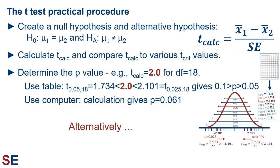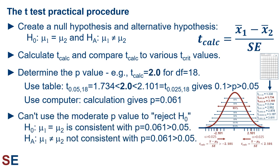Alternatively, if instead we had gotten a t-calculated value of 2.0 with 18 degrees of freedom, things are a little different. When we compare that value to the critical values, the 2.0 is larger than 1.734 — the critical value for alpha of 0.05 — but not as large as the 2.101 corresponding to alpha of 0.025. Therefore, because this is a two-tailed test, our p-value is less than 0.1 but larger than 0.05. A computer calculation gives us the exact answer of 0.061 for the p-value. In this situation, we can't use the moderate p-value to reject the null hypothesis — the null hypothesis of equal means is consistent with a p-value of 0.061, which is larger than 0.05.